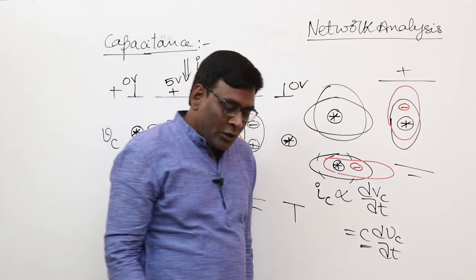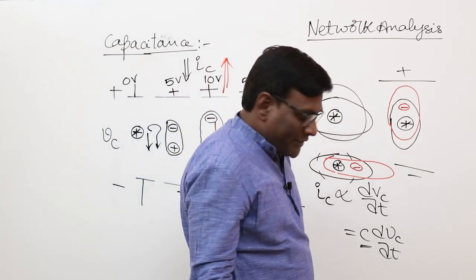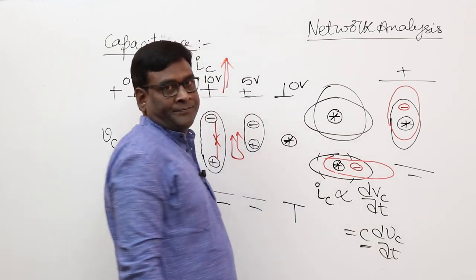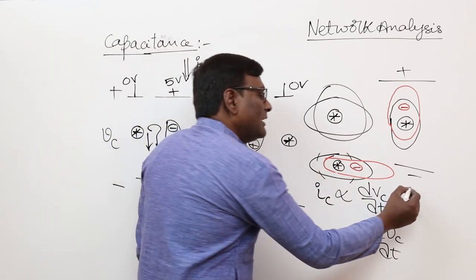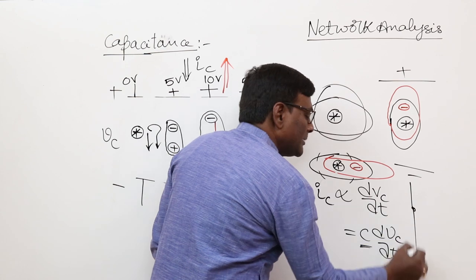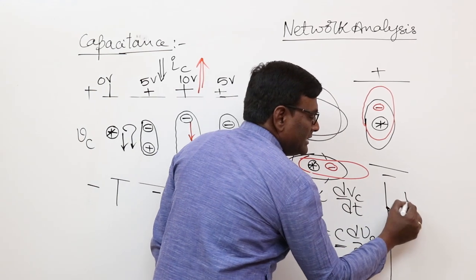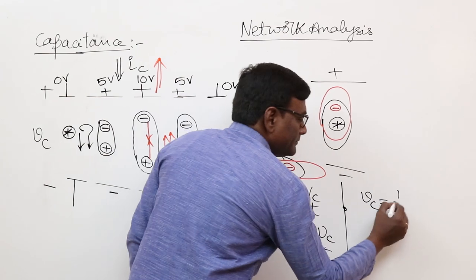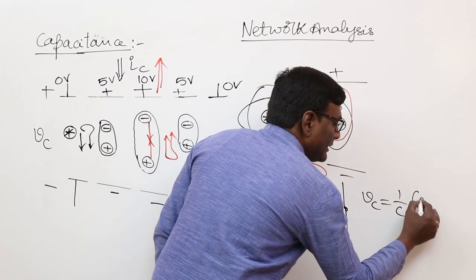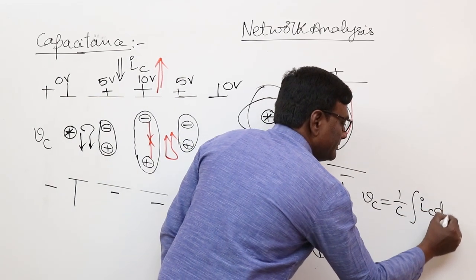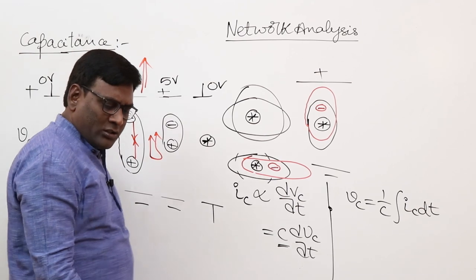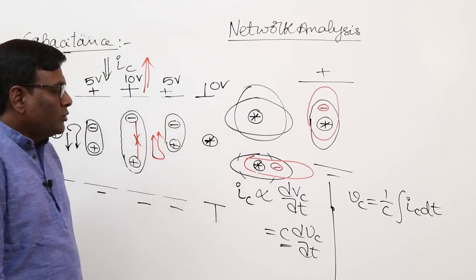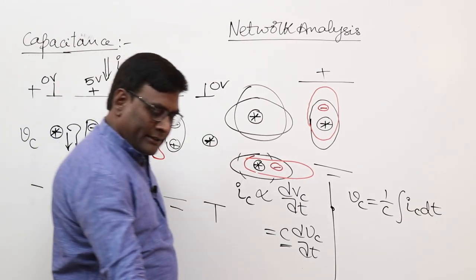The equation for a capacitor is ic = C · dvc/dt. Mathematically, voltage can be expressed as vc = (1/C) ∫ic dt. Now there is one important logic: why must we integrate from minus infinity to t, not from 0 to t?